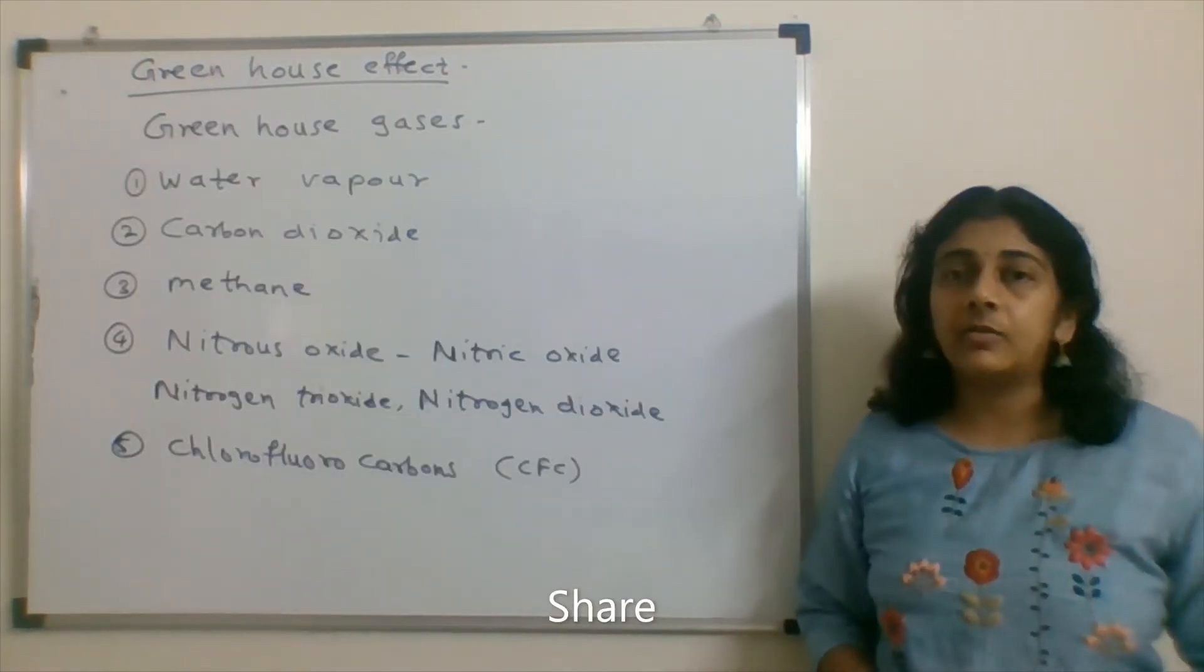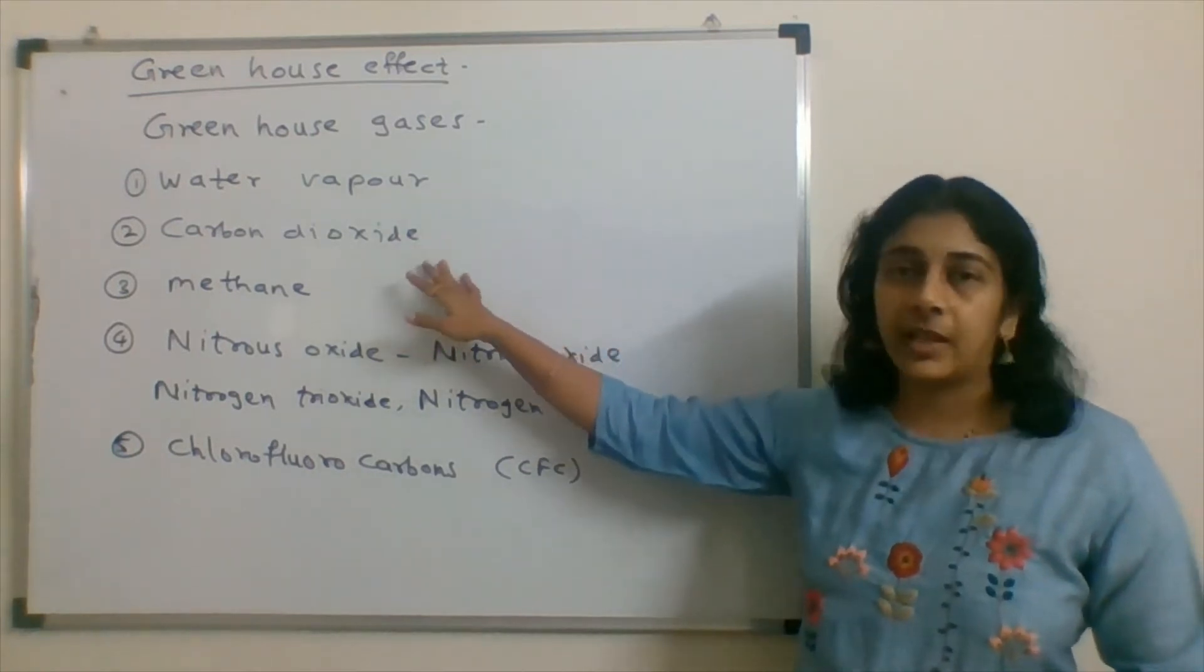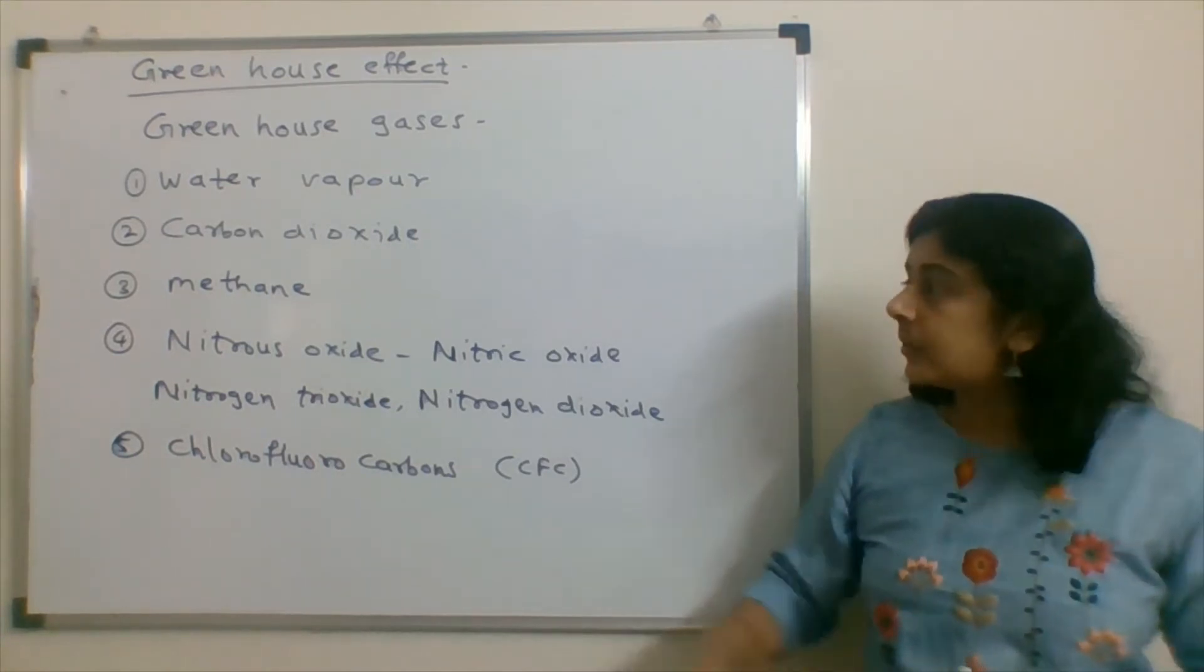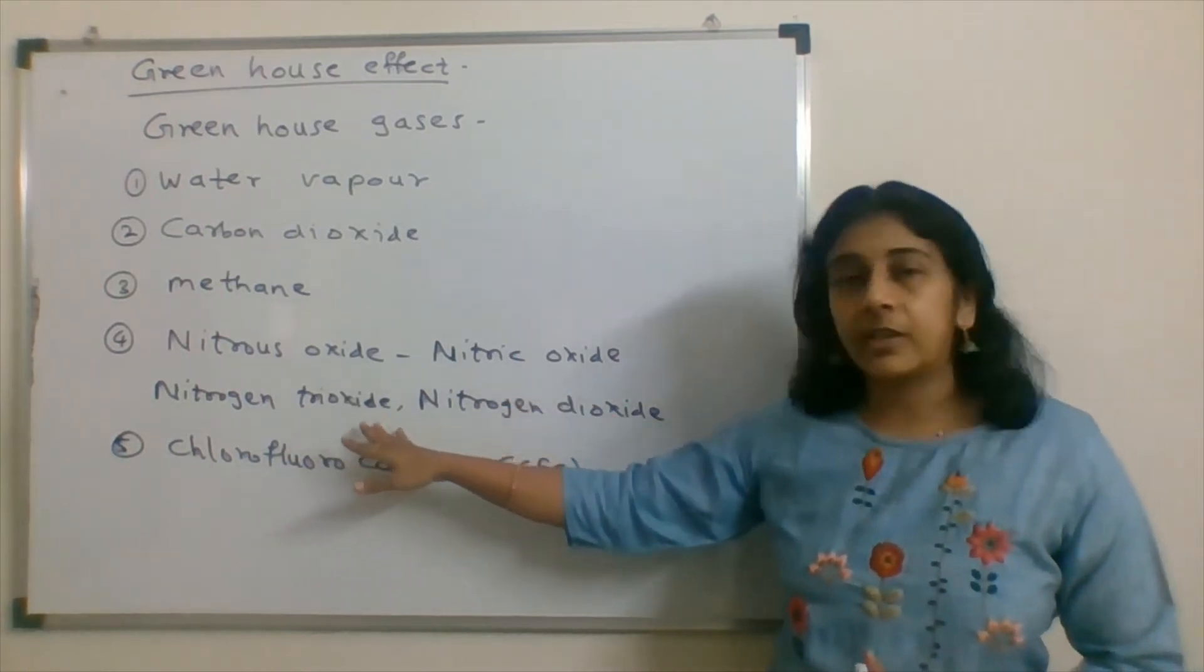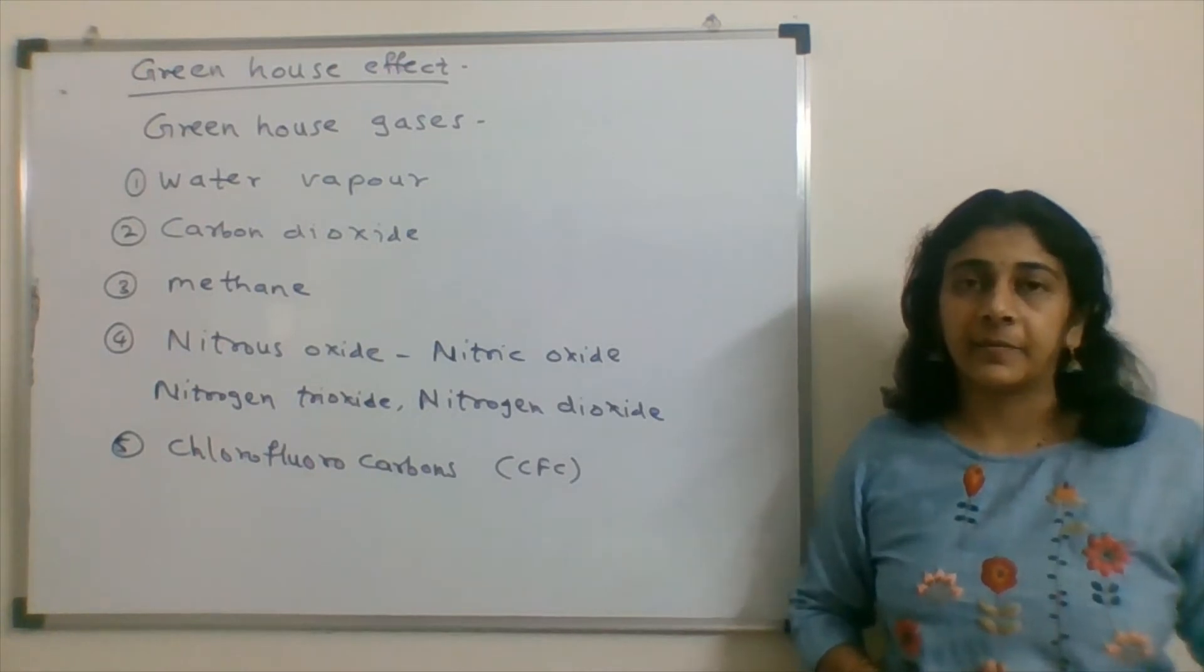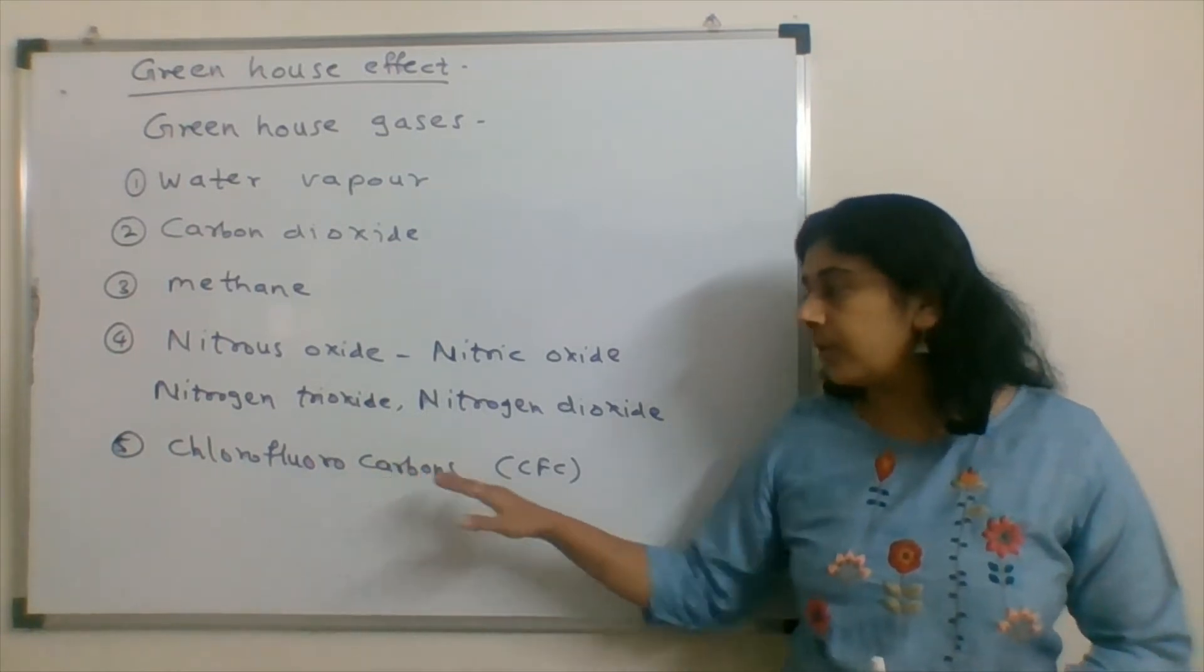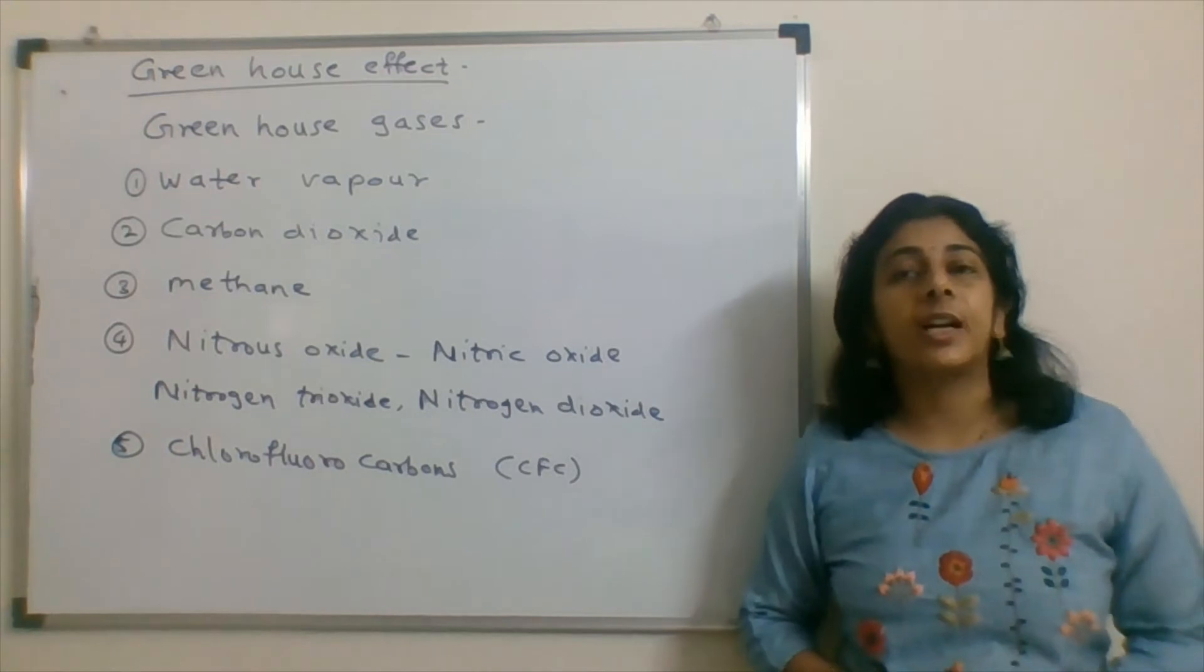Greenhouse gases include water vapor, carbon dioxide, methane, and different nitrogen oxides which includes nitrous oxide, nitric oxide, nitrogen trioxide, and nitrogen dioxide. Along with this artificial chemical, chlorofluorocarbons, are also included in greenhouse gases.